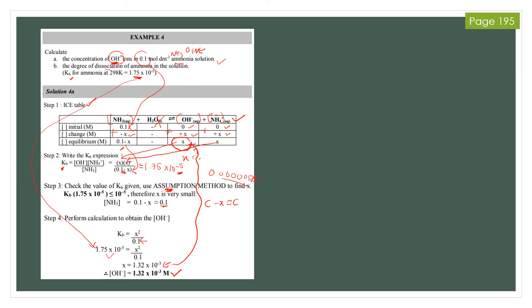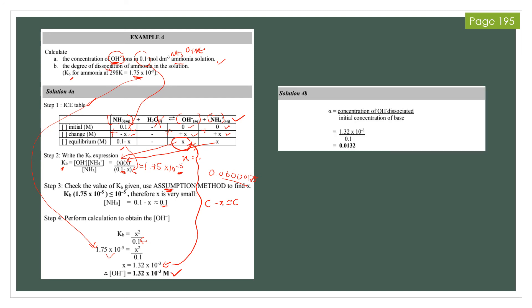For part B, the degree of dissociation of ammonia is requested. Write down the degree of dissociation equation: change divided by initial concentration. The change is X, and the initial concentration of the base is 0.1. Substitute the value of X to get the final answer. Examples 5 and 6 in the module are similar — go through them yourself to understand the flow.